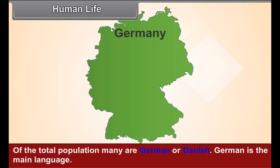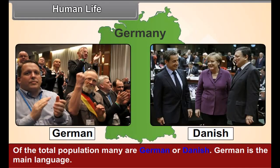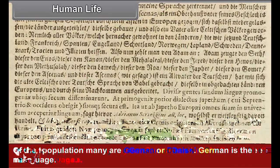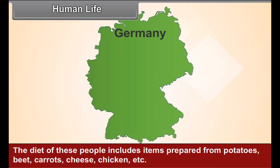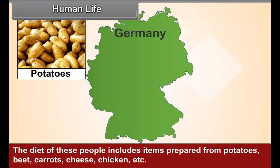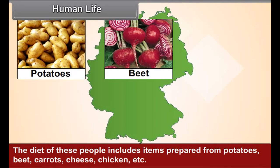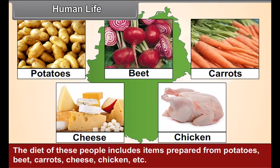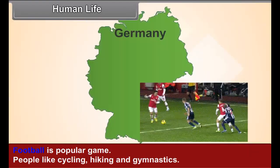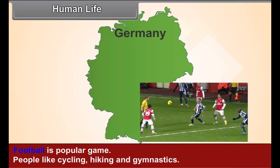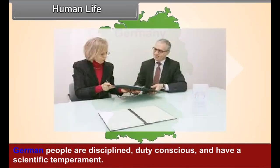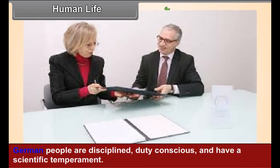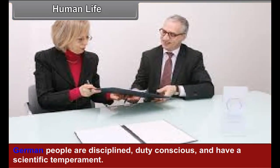Of the total population, many are German or Danish. German is the main language. The diet of the people includes items prepared from potatoes, beet, carrots, cheese, chicken, etc. Football is a popular game, and people enjoy cycling, hiking, and gymnastics. German people are disciplined, duty-conscious, and have a scientific temperament.